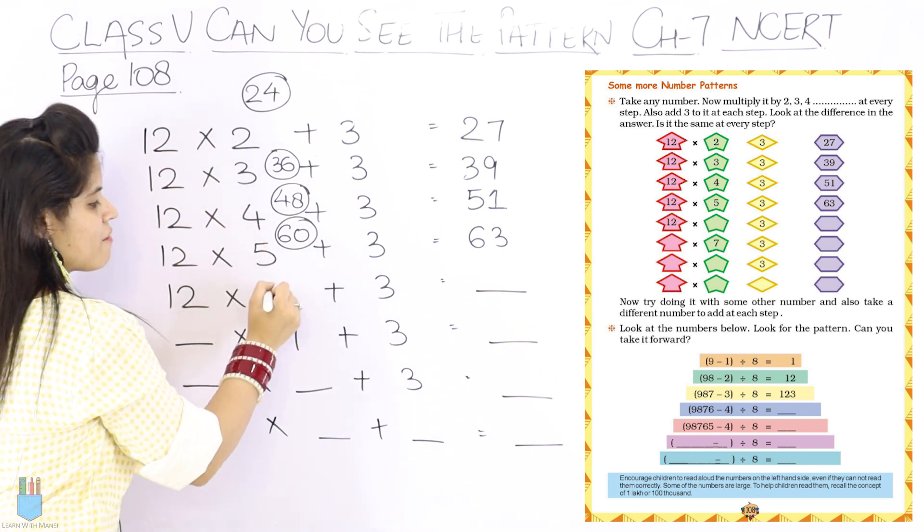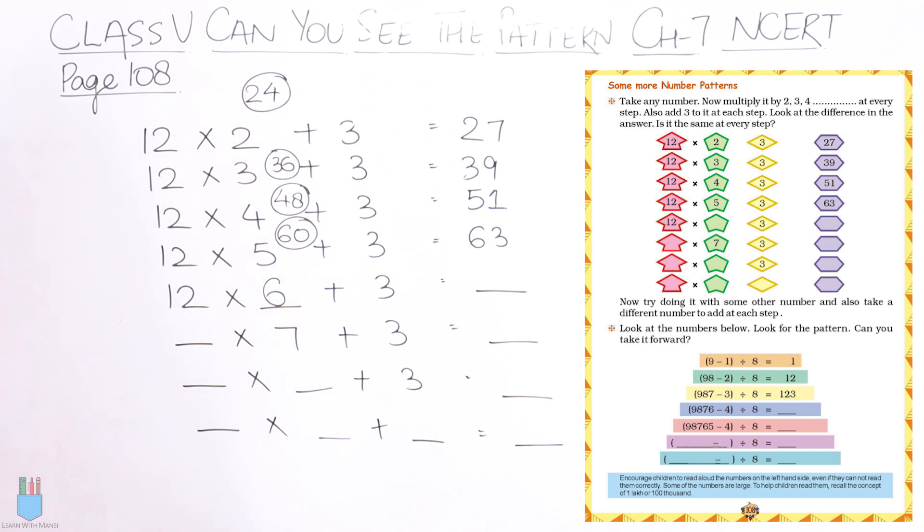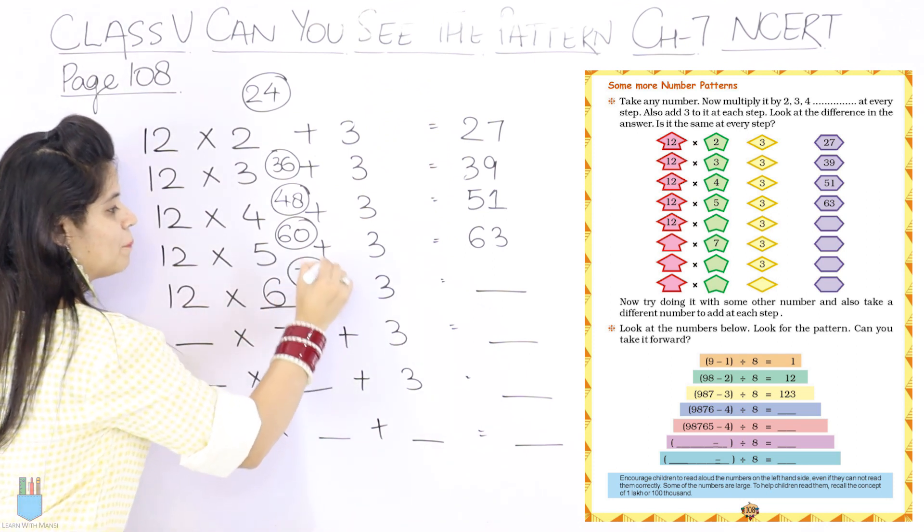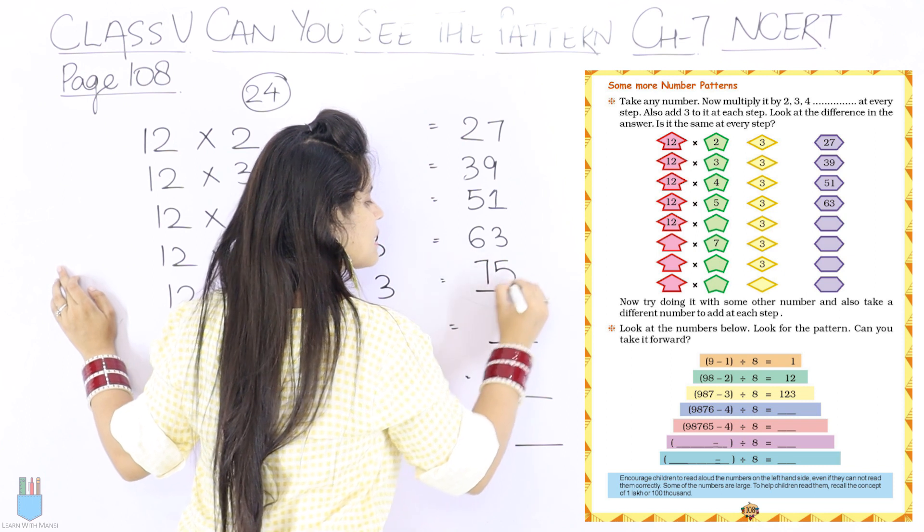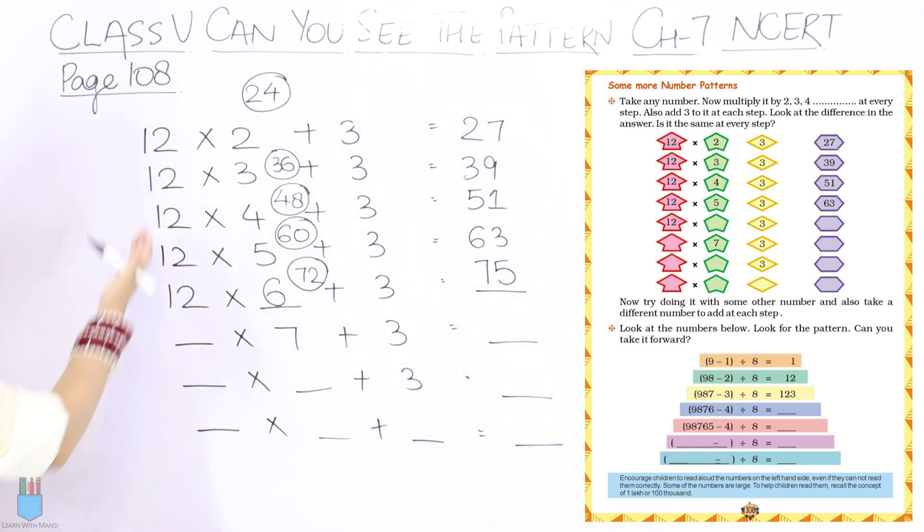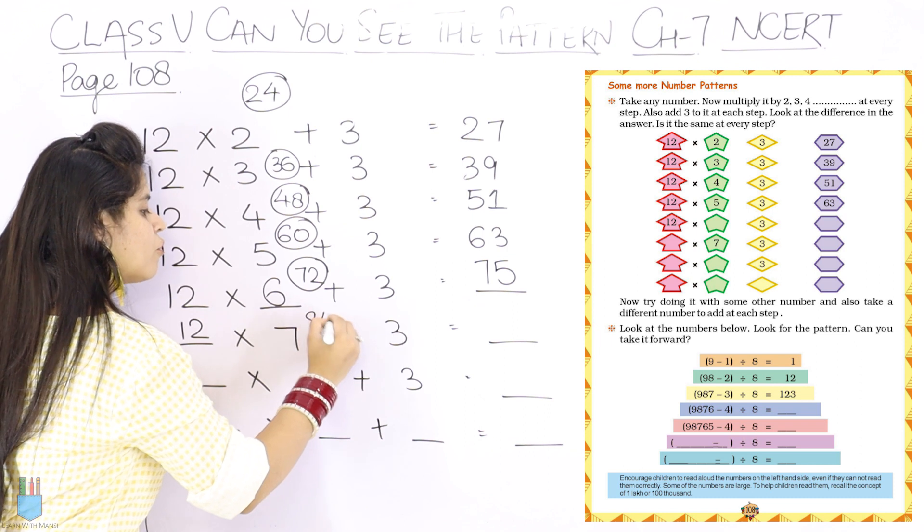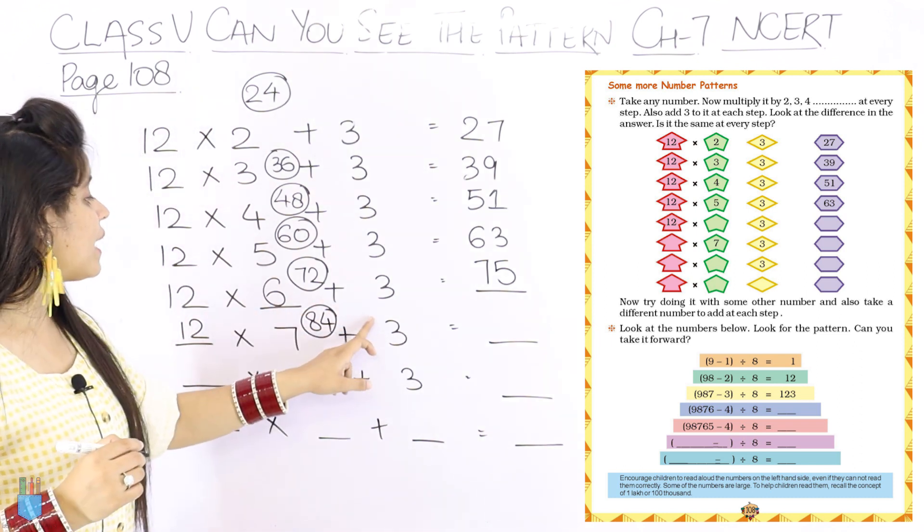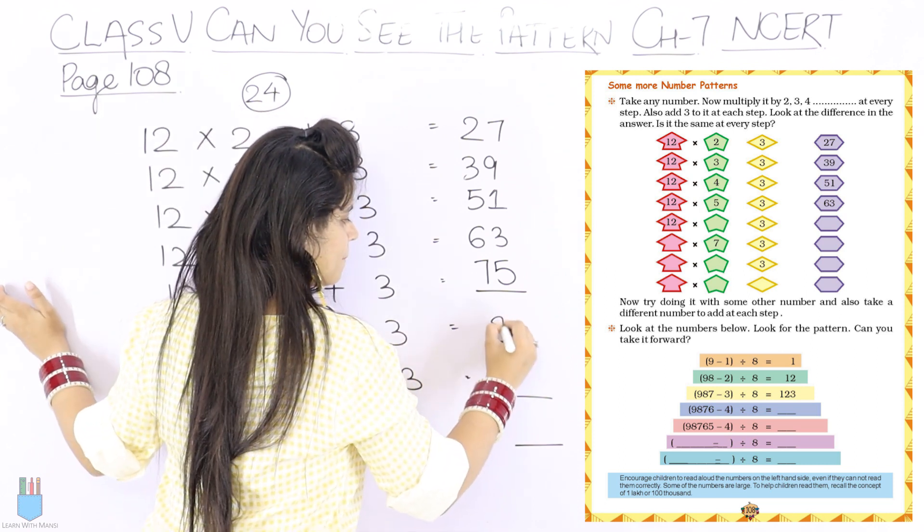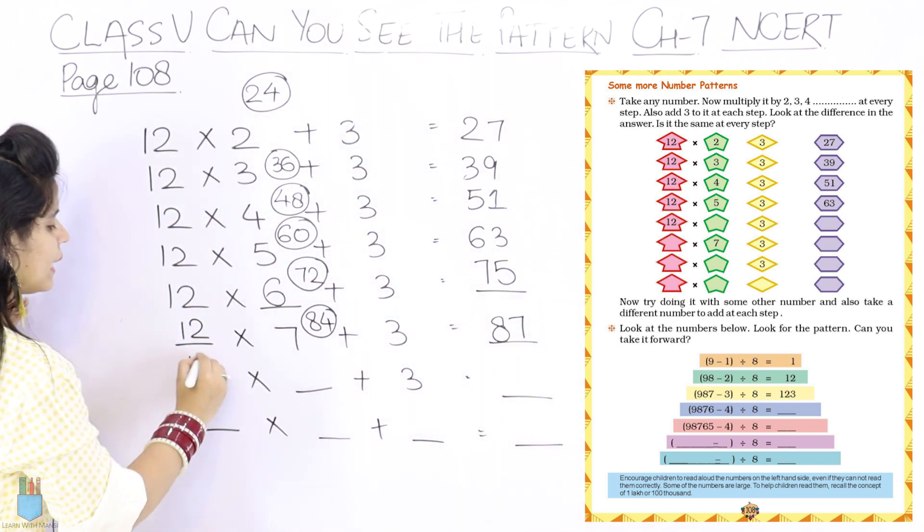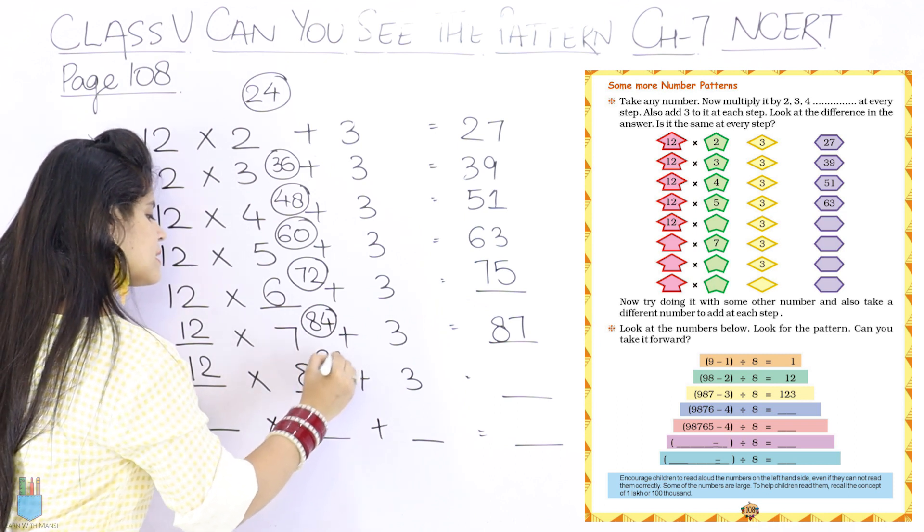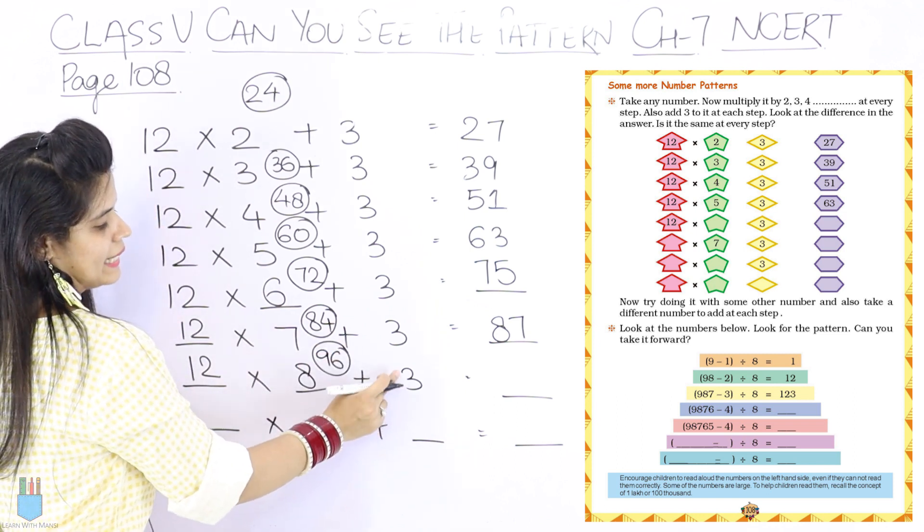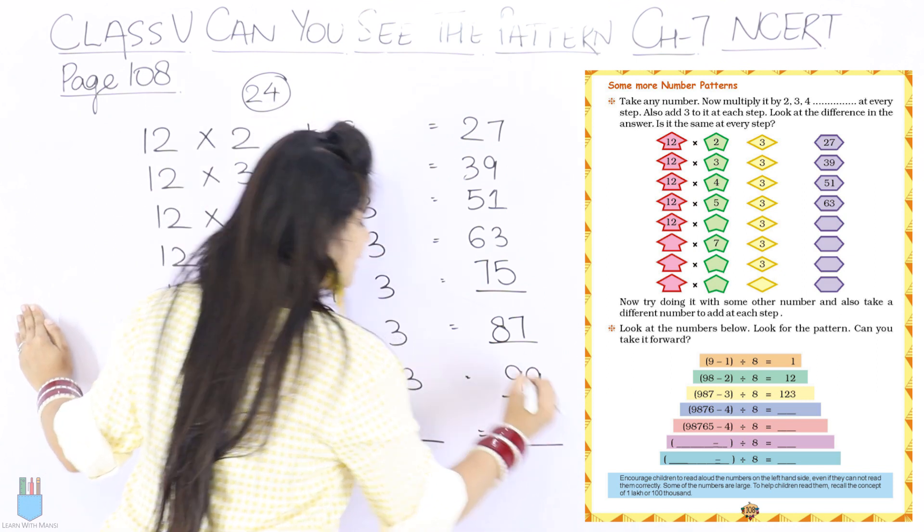So next step, 12 into 6 is 72. Now plus 3, so 72, 73, 74, 75. Next again, 12 into 7, so we have 12 into 7 is 84. Now 84 plus 3, so 85, 86, 87. Then again, 12 into the next step. After 7 is 8, right? So 12 into 8 is 96. Now 96, 97, 98, 99.